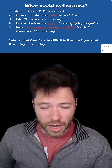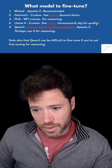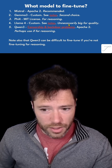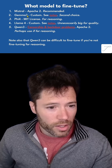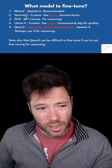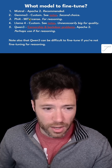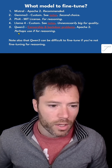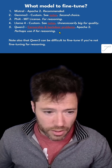Llama 4 has a custom license and is also very large — the Scout model is 100 billion parameters, which I think is unnecessarily big for the quality it provides. The quality is probably not much better than Gemma 27B, Gemma 3, or potentially even Mistral, so I recommend using Mistral or Gemma 3 over Llama 4.